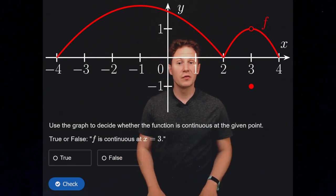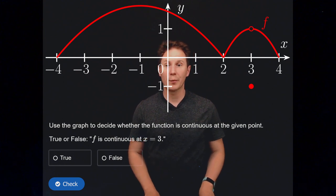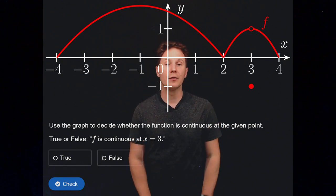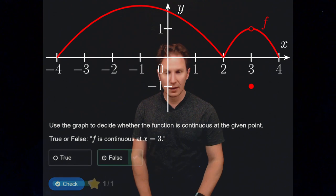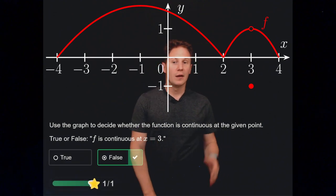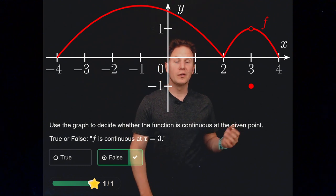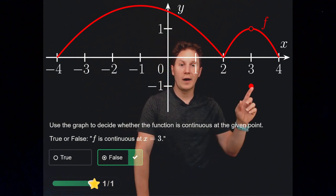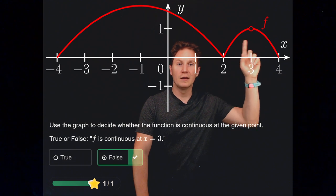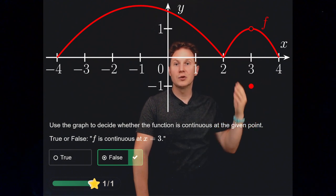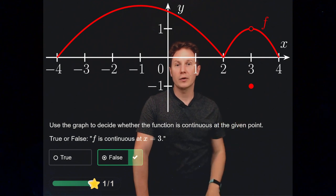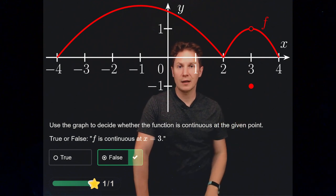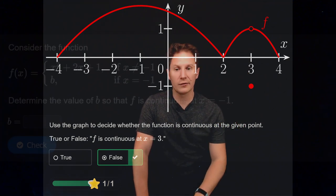Use the graph to decide whether the function is continuous at the given point: is it true or false that f is continuous at x equals three? The answer is false — the function has a discontinuity at x equals three. Even though it is defined there and has a definite limit as x approaches three, these two numbers — the limit and the value of the function — do not match, so it is not continuous at x equals three.